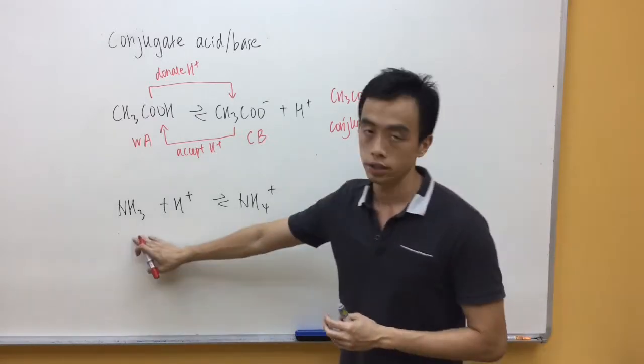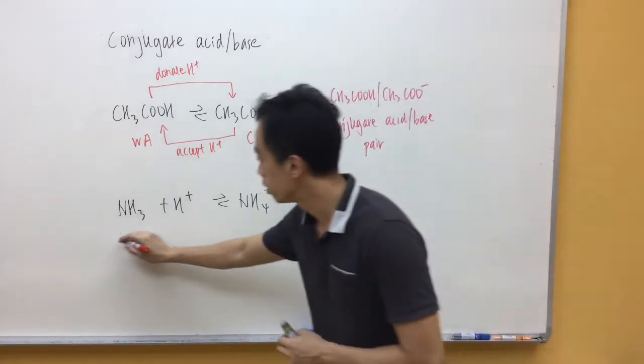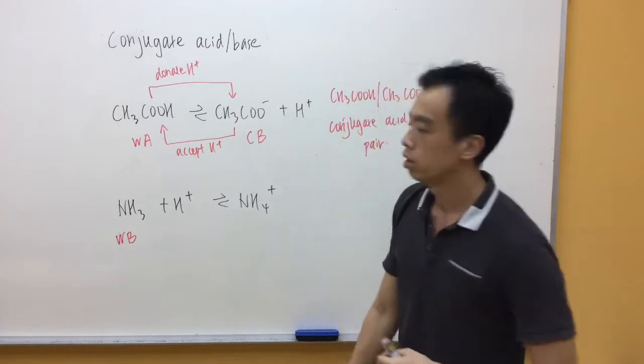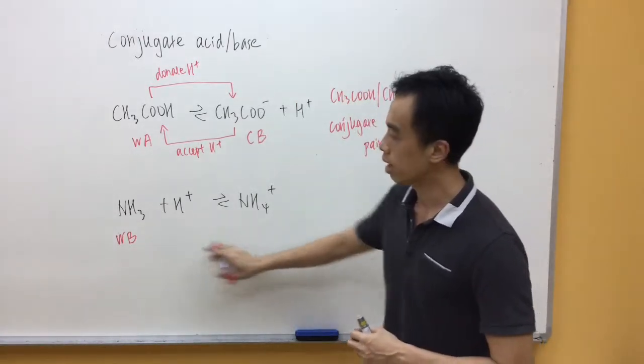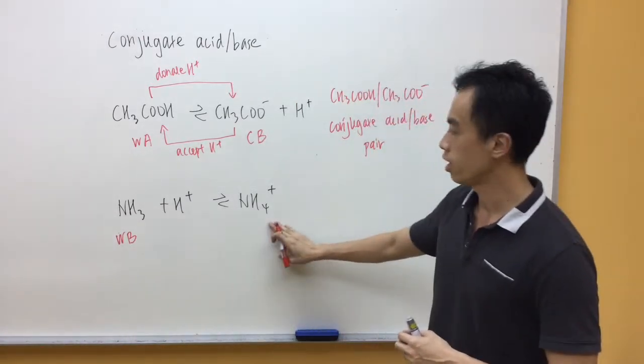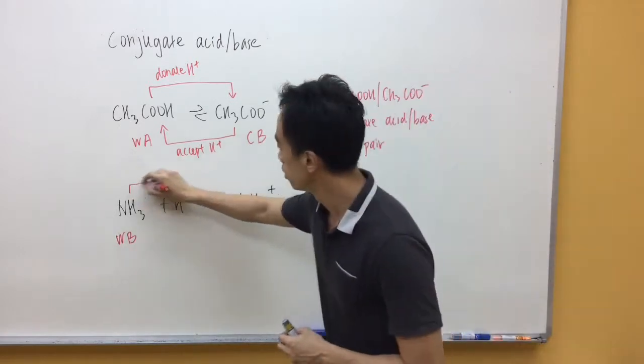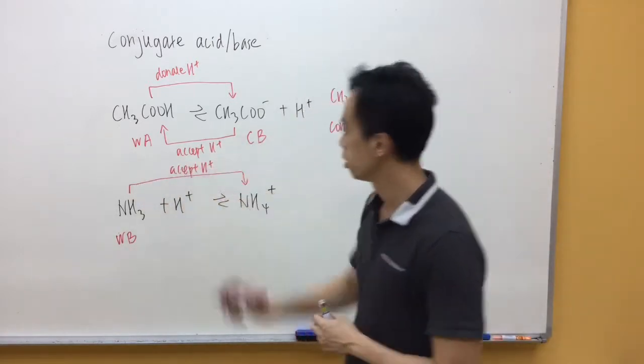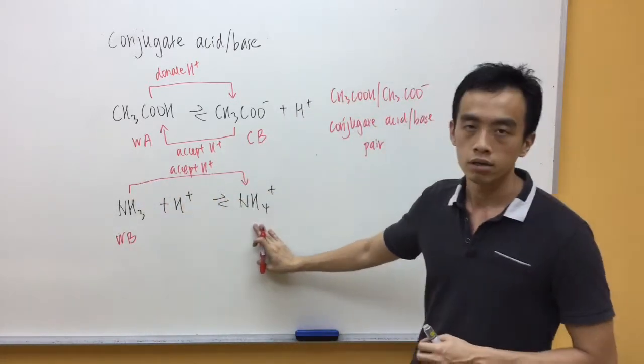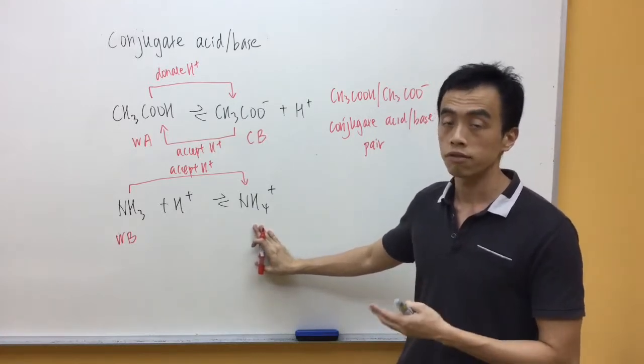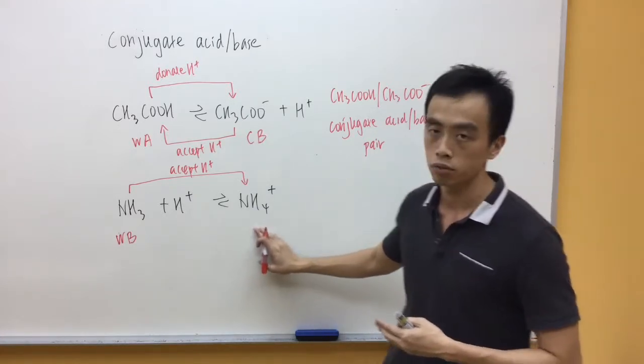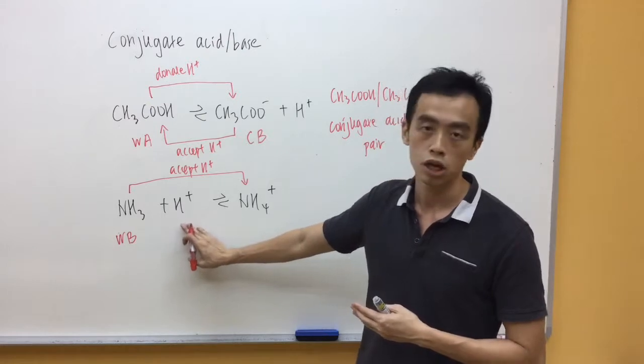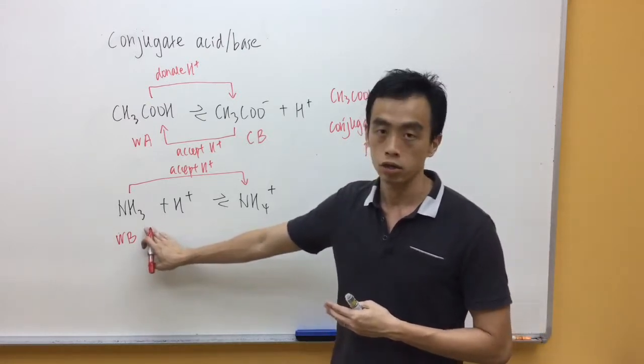Now, if you consider our ammonia, we know that ammonia is a weak base. So, in the forward direction, my ammonia will accept a proton to give me NH4+. And what we noticed in this case is, how do I consider or how do you quantify NH4+? Now, NH4+, in the reverse direction, actually releases H+ to form back NH3.